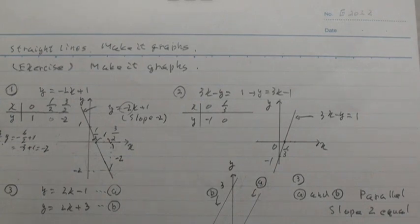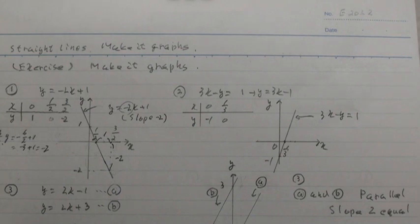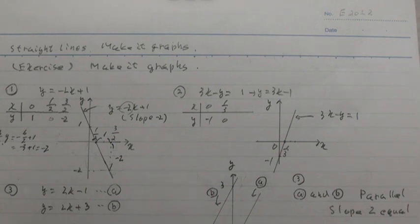Hello everyone. Number E 20L2. Straight lines make it graphs. Exercise. Make it graphs.